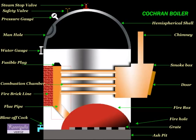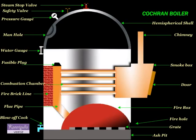Combustion chamber is lined with fire bricks on the side of the shell to prevent the heating up of the shell. Fire tubes or smoke tubes: the hot flue gases pass through a number of horizontal fire tubes which are surrounded by water. After the flue gases heat up the surrounding water, the gases escape to the atmosphere through the smoke box and the chimney.